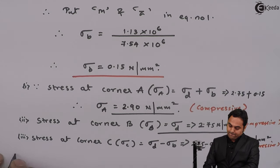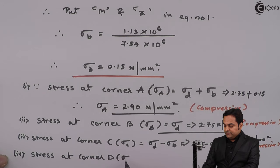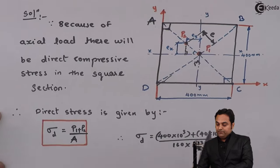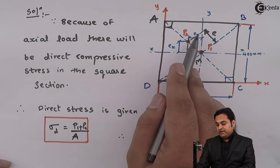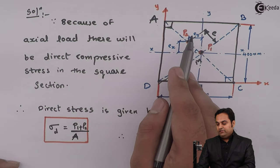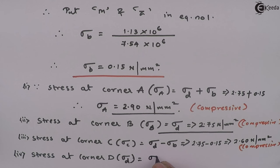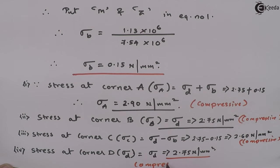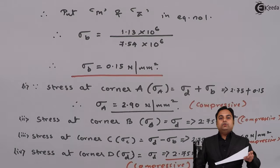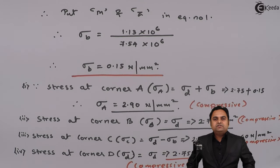Stress at corner D: similarly, the effect of P2 does not act on D since it lies on diagonal AC and the eccentricities are equal. If the eccentricities were different, there would be an effect on B and D as well. So σD = 2.75 N/mm², compressive. All four corners have compressive stress, and with this we complete the problem.